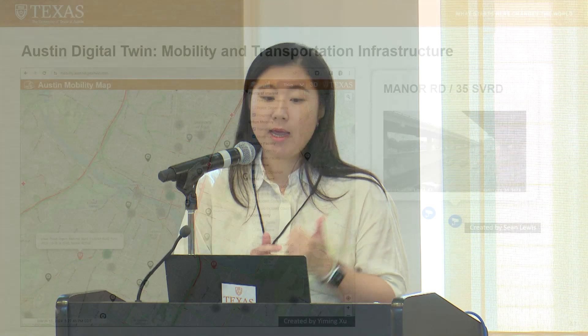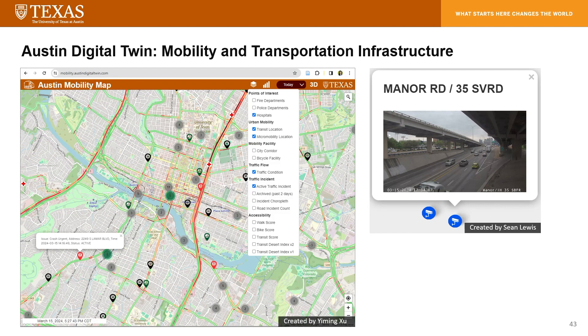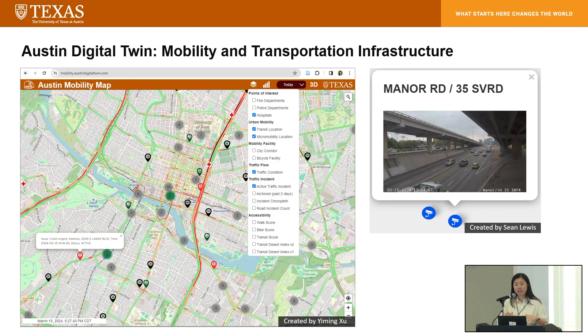The Austin Digital Twin has three main layers. The first layer is the mobility and transportation infrastructure layer. In the mobility layer, led by Dr. Yiming Su, we collected traffic camera information in real-time and integrated it into the web-based map. We also collected real-time traffic condition data from the Google Maps JavaScript API, and traffic incident reports from the City of Austin were collected, processed, and visualized in the web-based platform.